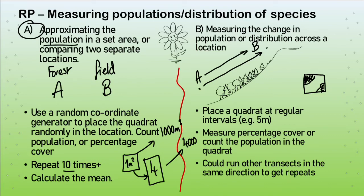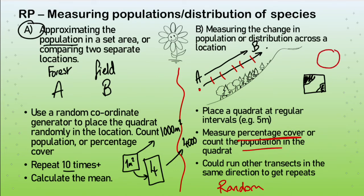For the second technique — a transect — when measuring change across a location, we place quadrats at regular intervals. As we move up a slope, we place them at positions one, two, three, four, five along a tape measure laid up the hill, counting population or percentage cover at each point. We can add randomness by running multiple transects — imagining a bird's eye view of a mountain, randomly generating compass degrees around 360° to place random transects at different locations, giving lots of data to take a mean from.